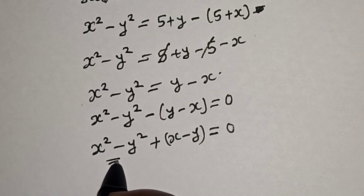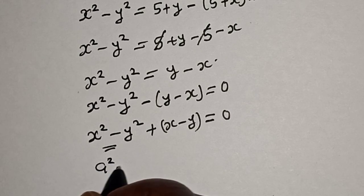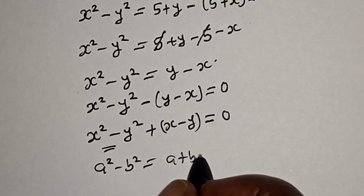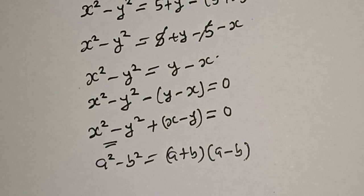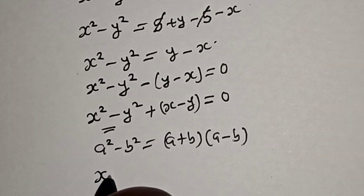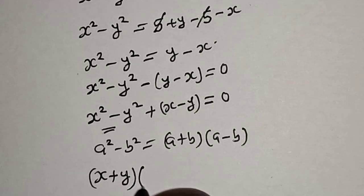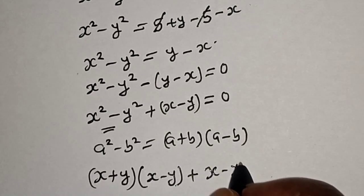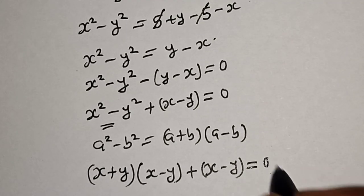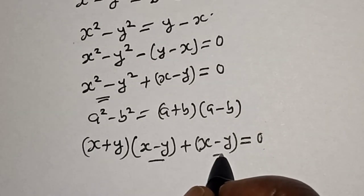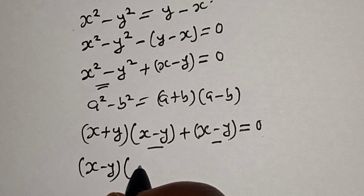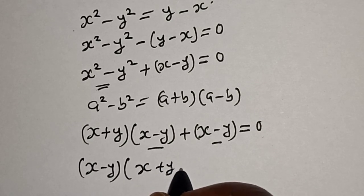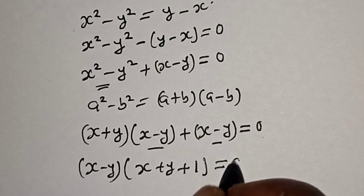Now this is a difference of two squares. Recall that a square minus b square is equal to a plus b multiplied by a minus b. So s square minus y square becomes s plus y multiplied by s minus y, and then s minus y is common. Factoring it out: s minus y into s plus y plus 1 is equal to 0.